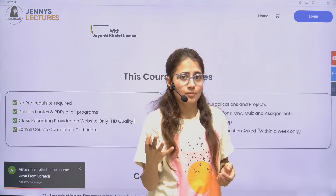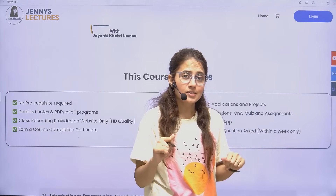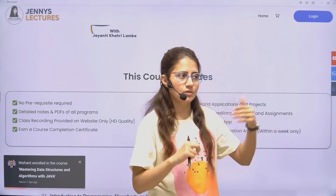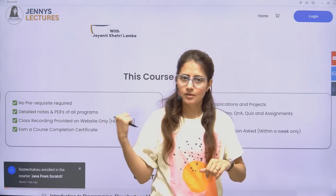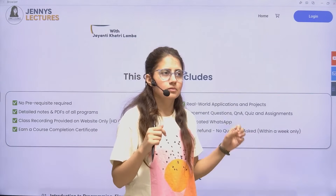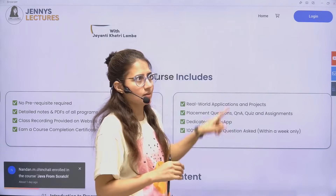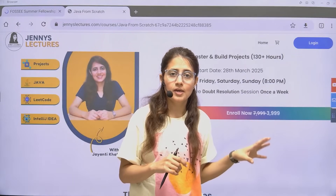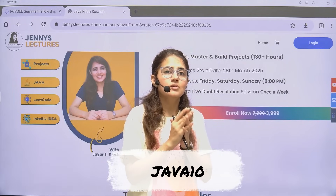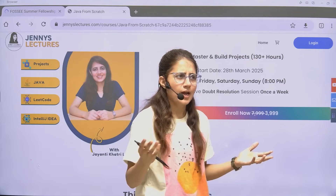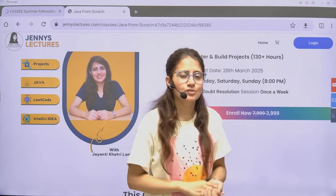If you get stuck somewhere, we will have weekly live doubt resolution sessions where you can ask me your doubts. After enrolling, you will also get access to a dedicated WhatsApp group where you can interact with other students and with me — I'm just one message away. After completion, you will get a completion certificate, plus quizzes and assignments. Not just theory, but practical as well, with LeetCode and placement questions. Right now with early bird offer, it's just ₹3999 — original price is ₹7999, slashed to half — and use code JAVA10 for an extra 10% off, just for the first 100 students. The link is in the description. You can also check out my DSA with Java course from the description.